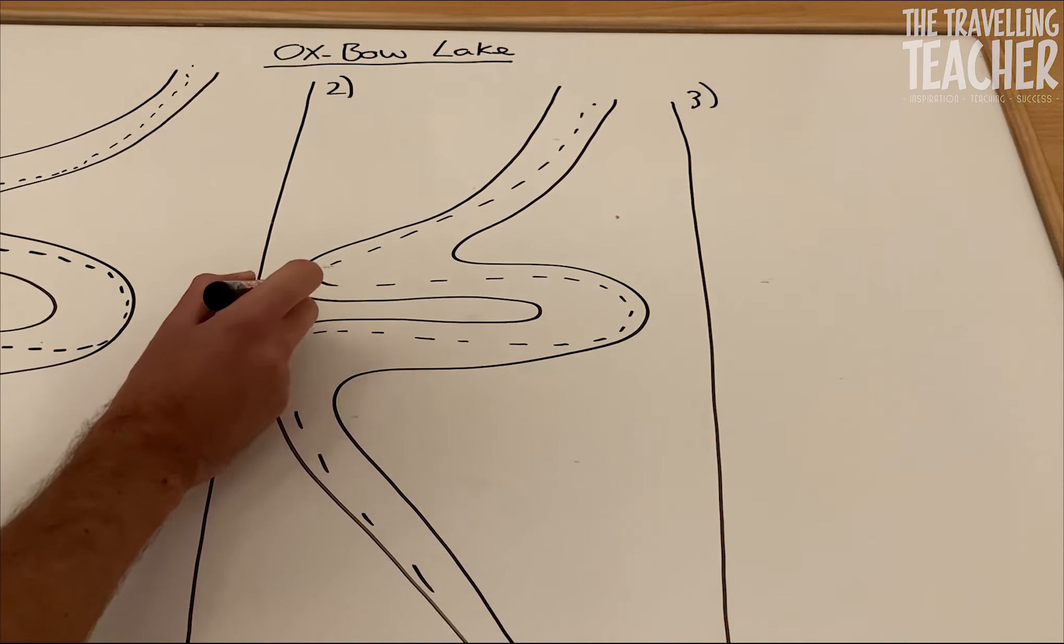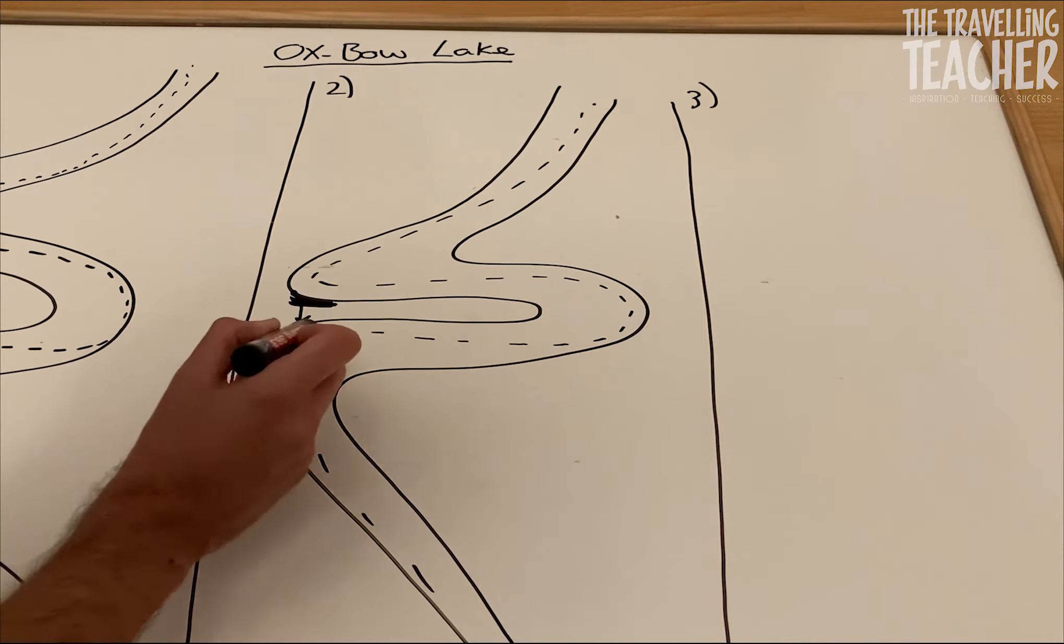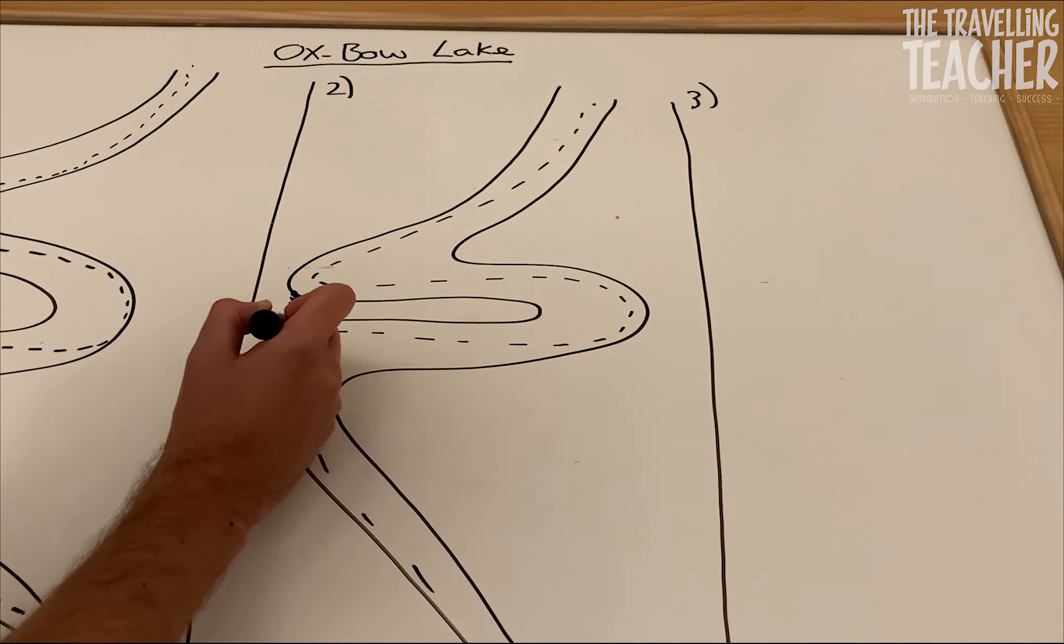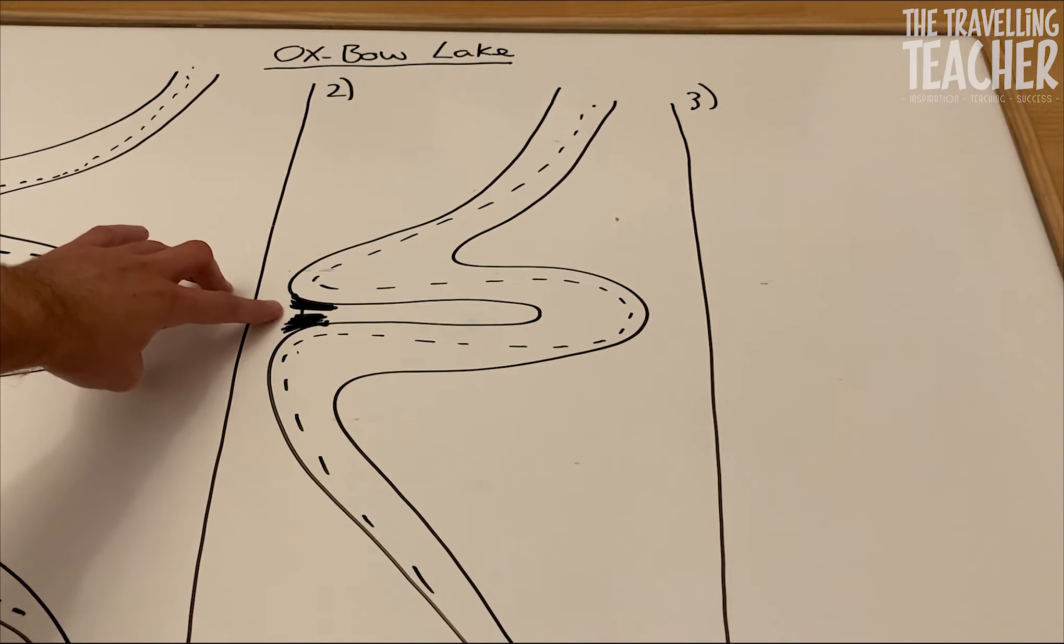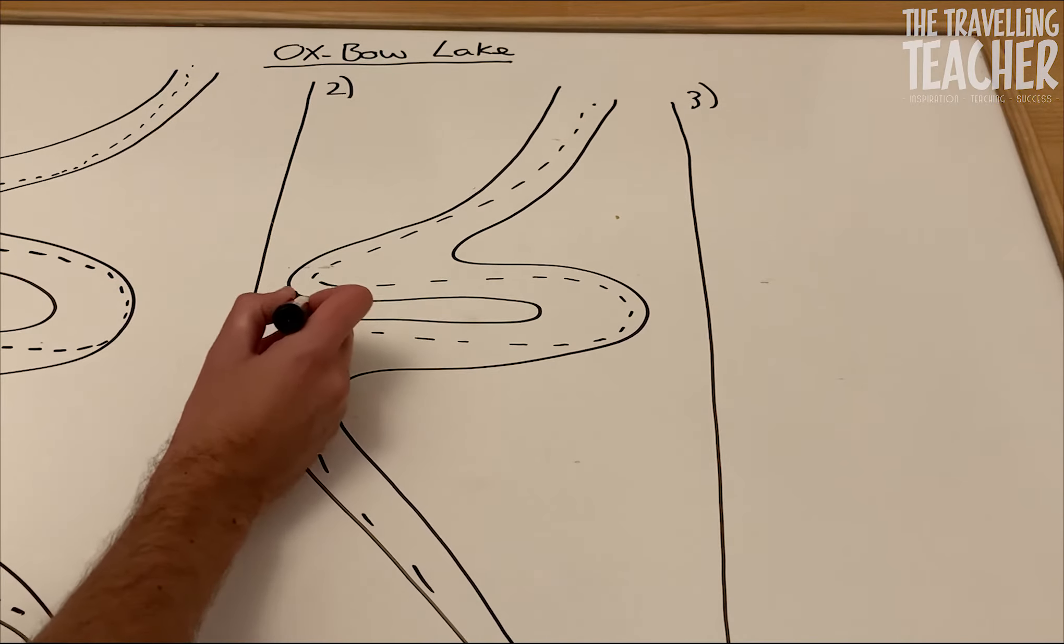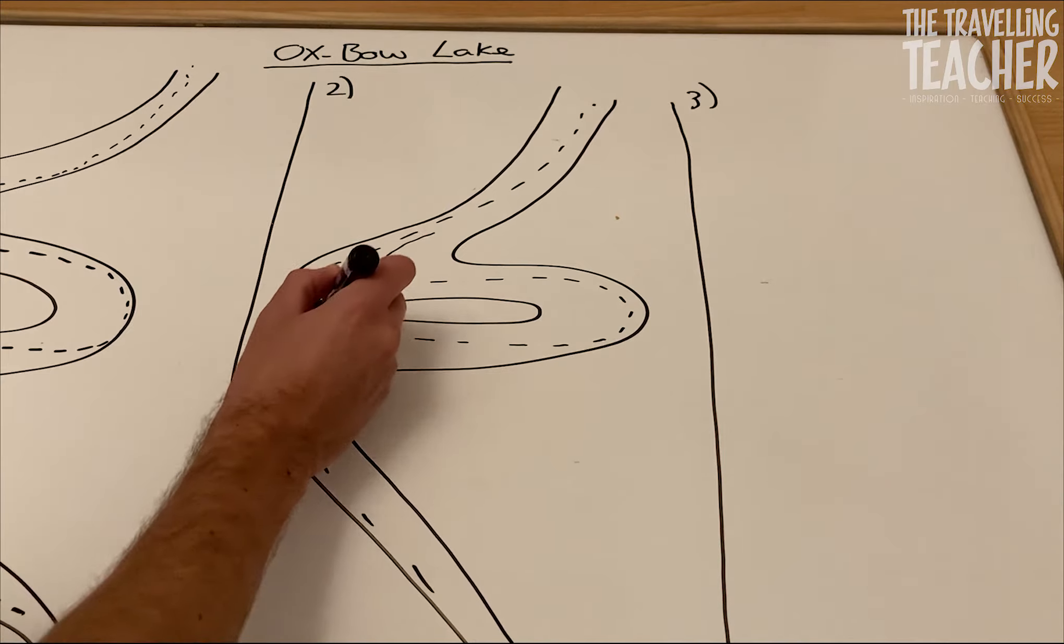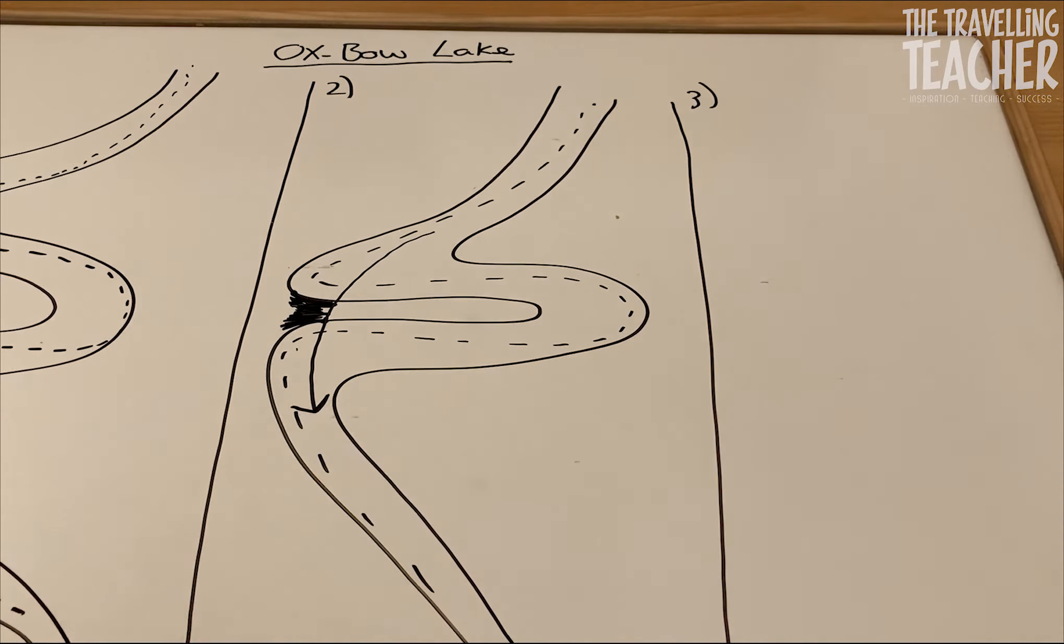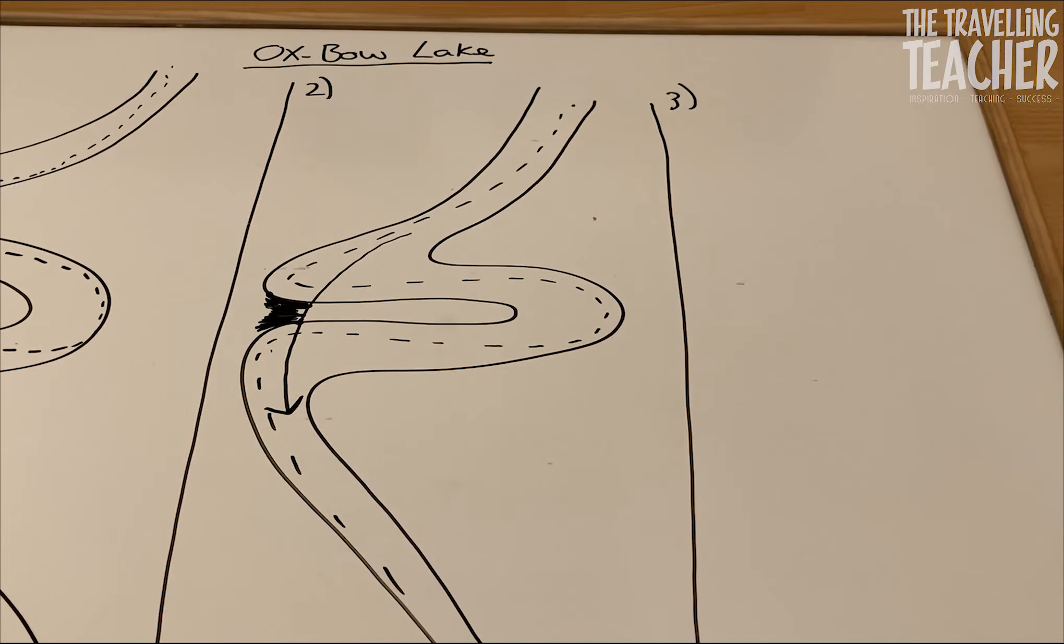So, as this bend erodes further to this meander, and this bend erodes further to the meander above it, the neck just gets more and more smaller. I mean, there's a tiny little gap there now. And eventually, it will just break through. And the water will take the quickest route through the river channel. So, I'm just going to move my board over slightly so you can see diagram three. That's perfect.